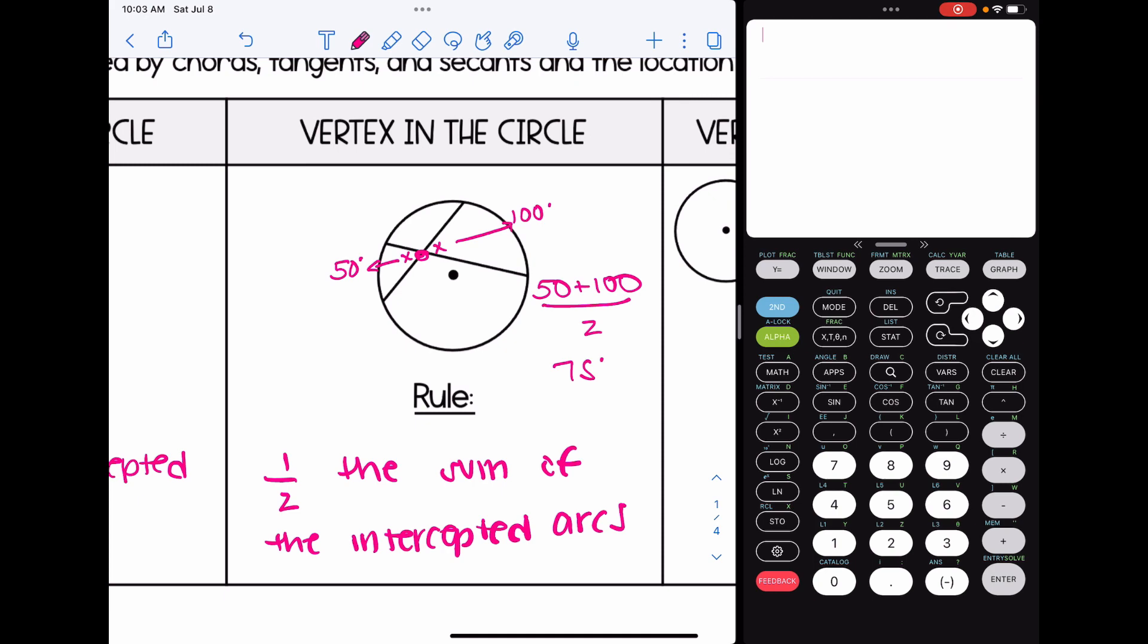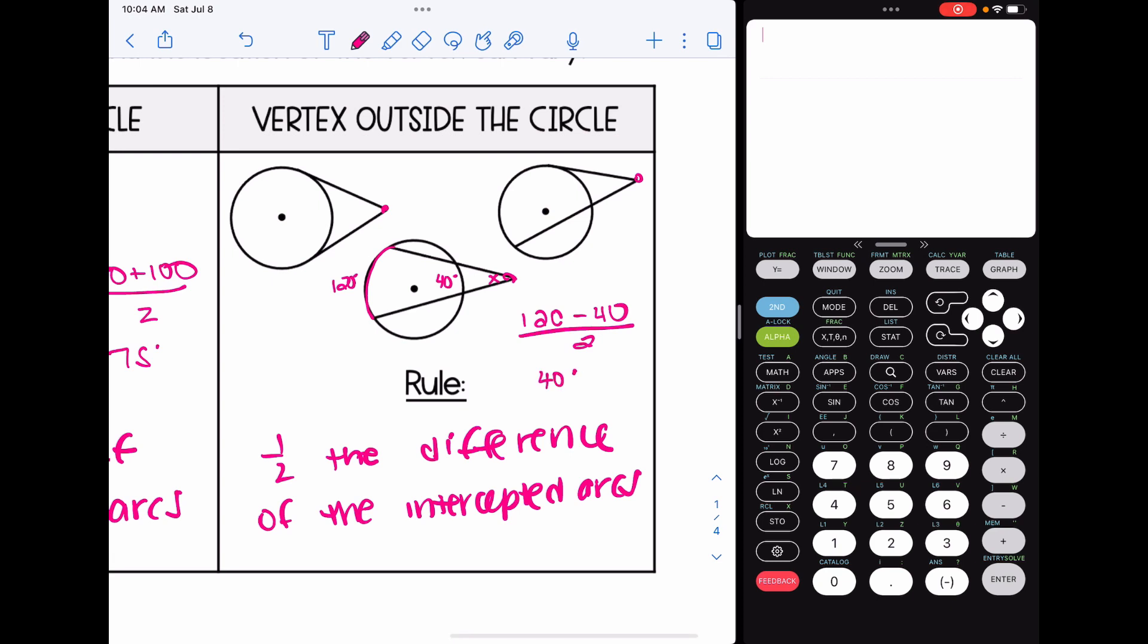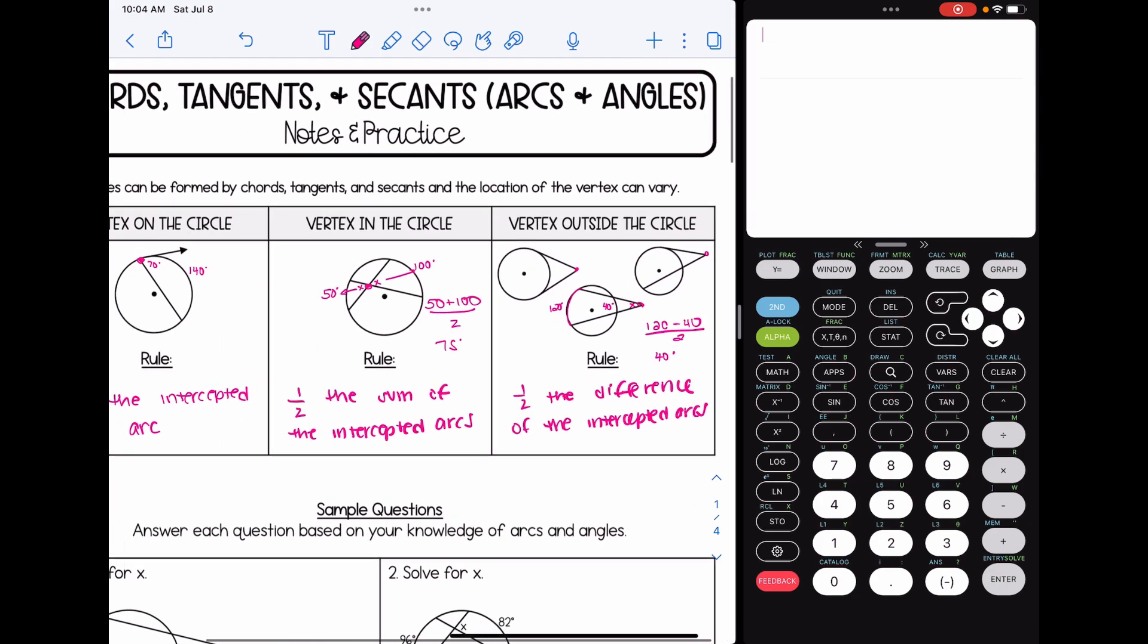You could also think about it as the average of those two arcs. The last scenario is if the vertex is outside the circle, this rule is now half the difference, meaning we're going to subtract, of the intercepted arcs. So I'll just do one quick example here. I'll use this bottom picture that has two secants. Let's say that this arc is 120 degrees. I'm referring to this arc that is kind of going between the two endpoints of the secant. And let's say that this arc is 40 degrees. If I was trying to find the measure of x, I would find the difference between the two arcs and have it, or divide by two, and that would give me 40 degrees. When I subtract, I get 80. Divide by two, I get 40. So we're going to be using one of those three rules for each problem in this video.